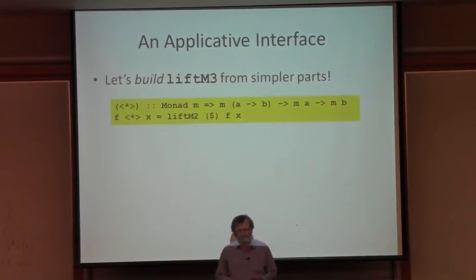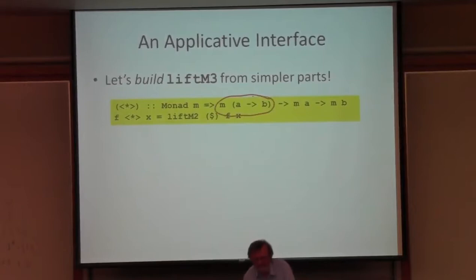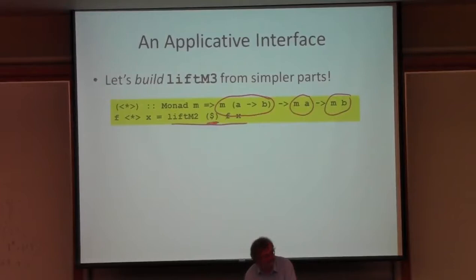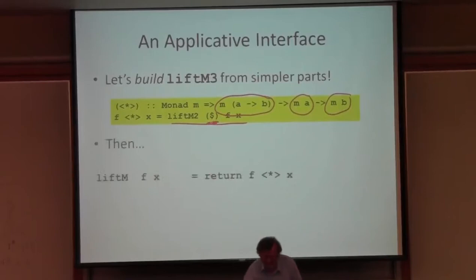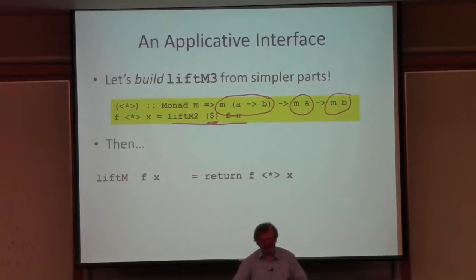I can solve that problem by breaking liftM3 down into smaller parts. That's what we're going to be doing today. Let me introduce another operation — I'll call it apply. For any monad, it takes a computation that delivers a function and a computation that delivers an argument, and gives you a computation that delivers the result. It kind of lifts function application — dollar is Haskell's application operator — up to the monadic level.